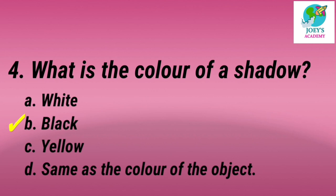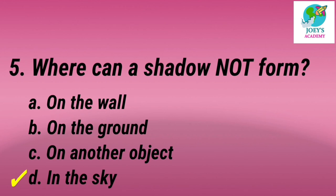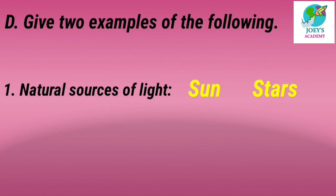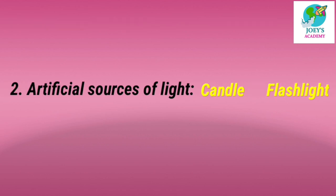Fifth: where can a shadow not form? A) on the wall, B) on the ground, C) on another object, D) in the sky. Answer is D — in the sky. Give two examples of the following. First, natural sources of light: sun and stars. Second, artificial sources of light: candle and flashlight.